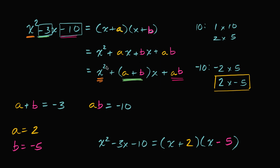I did this fairly step-by-step so you could see where everything comes from, but in the future whenever you see a quadratic with a leading coefficient of one, you can quickly say: I need two numbers that add up to the coefficient on x and multiply to the constant term. They'll have different signs since the product is negative, and the negative one is larger since the sum is negative. Five and two seem interesting — negative five and positive two add to negative three and multiply to negative ten. That's your answer.